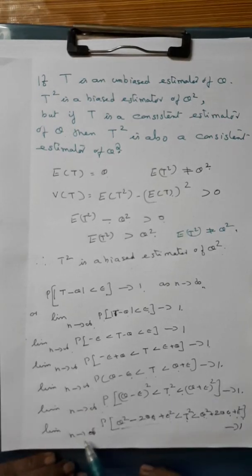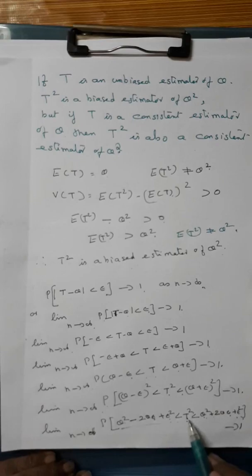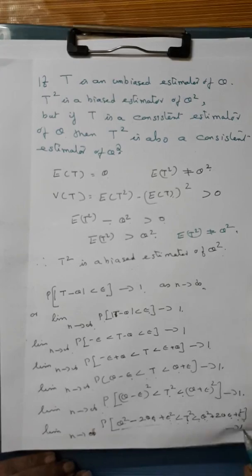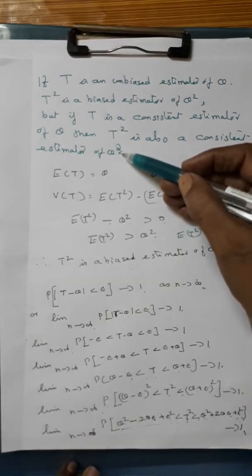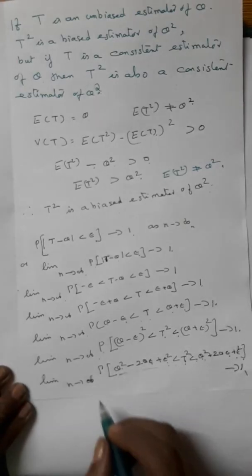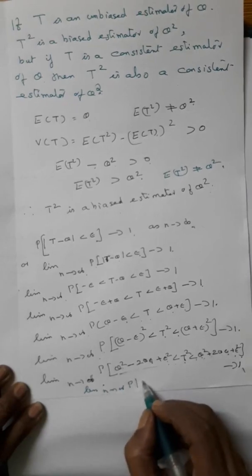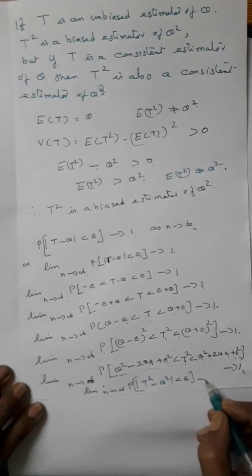Expanding, that is limit n tends to infinity of P of theta squared minus 2 theta epsilon plus epsilon squared less than T squared less than theta squared plus 2 theta epsilon plus epsilon squared tends to 1. We are going to prove that T squared is a consistent estimator of theta squared, so we need to prove that limit n tends to infinity of P of |T squared minus theta squared| less than epsilon tends to 1.